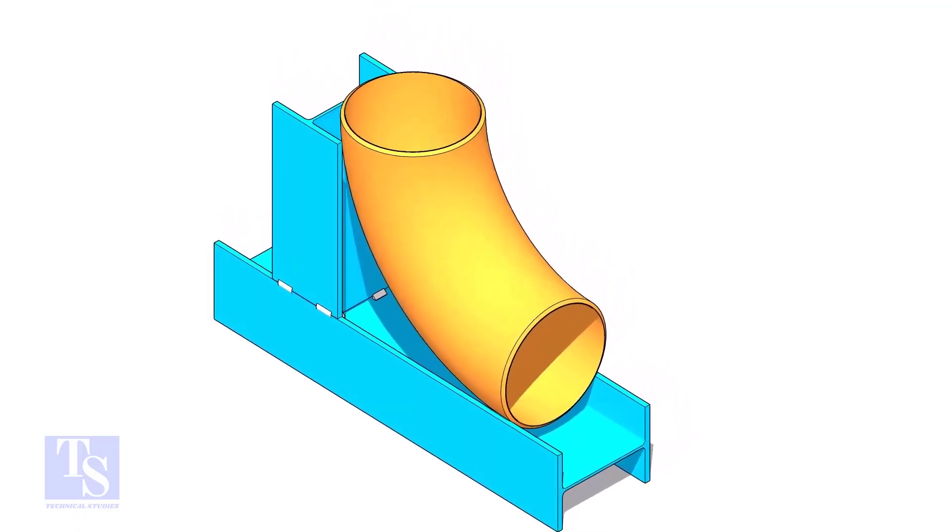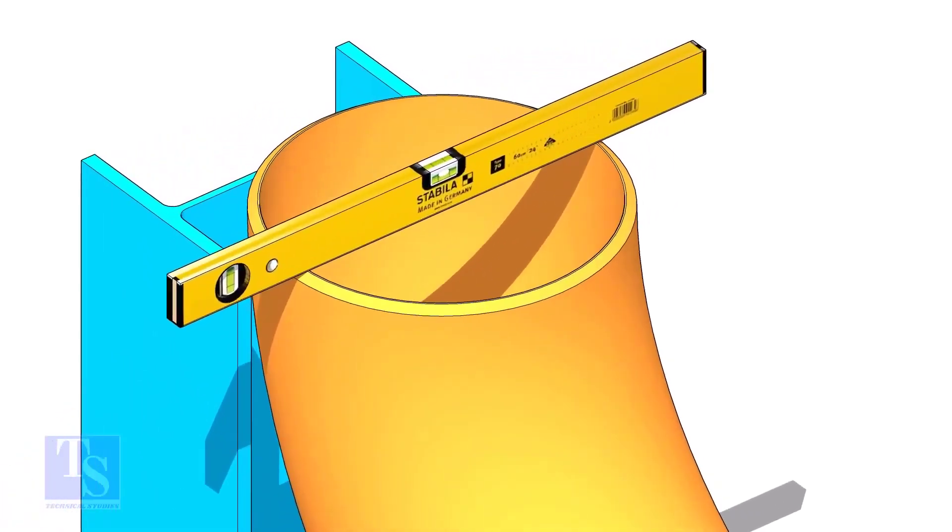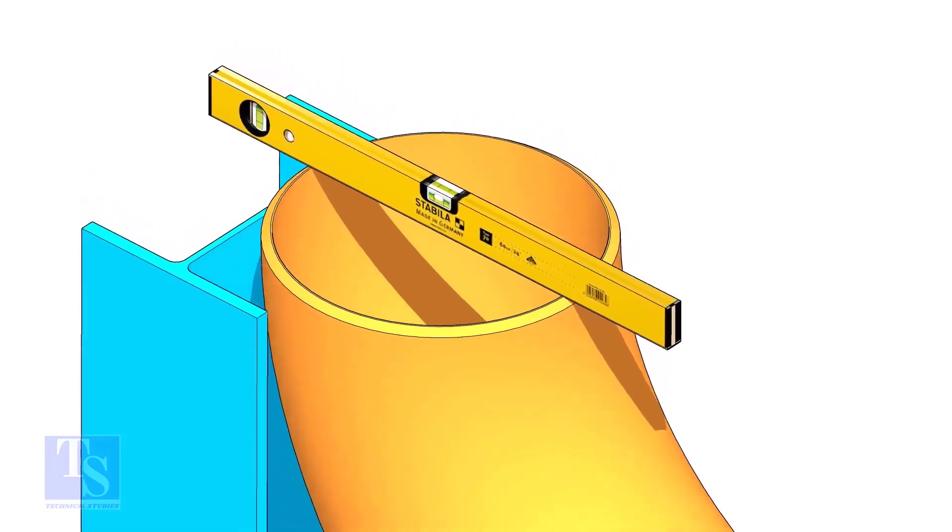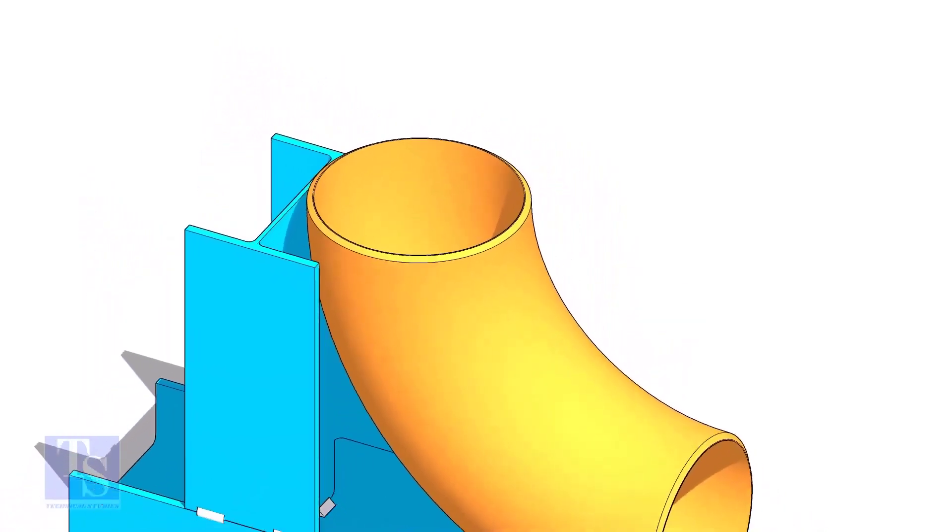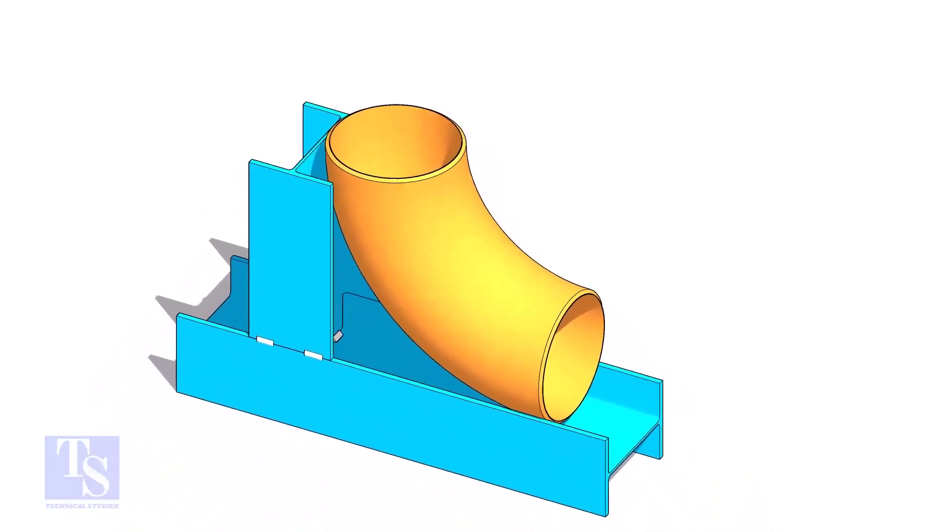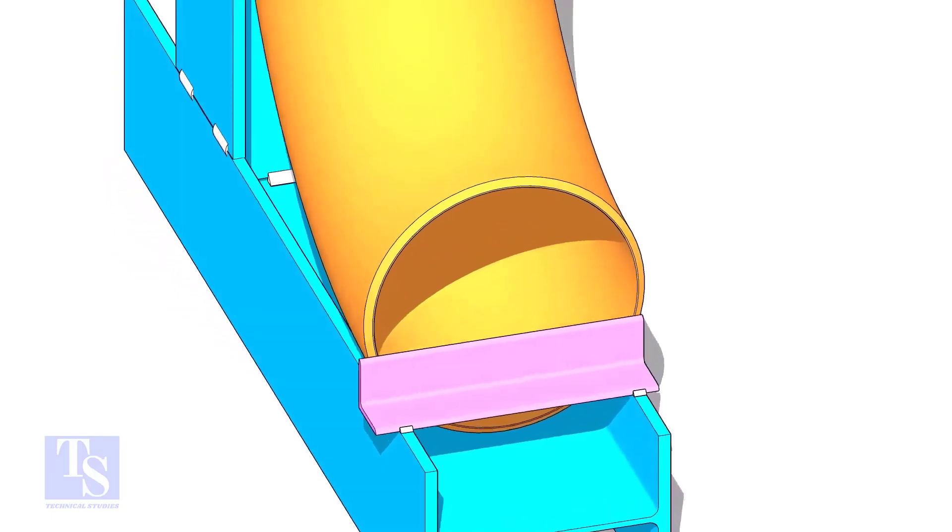Put the elbow in the jig. Level the top face of the elbow on both ways. Tack weld a piece of angle bar or a piece of a plate at the bottom side of the jig to arrest the elbow.